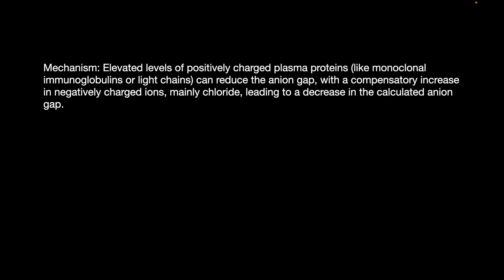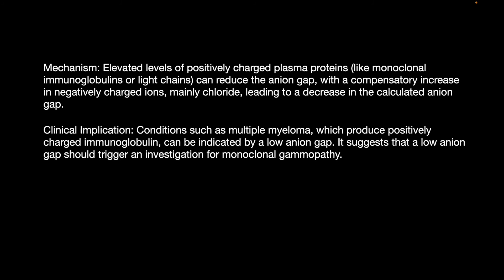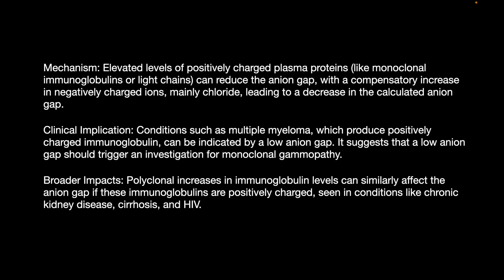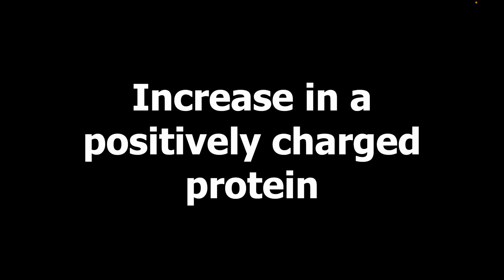Next case: a 70-year-old patient with fatigue while riding a bicycle. Serial lab testing shows anemia, renal insufficiency, and an anion gap of 2. An elevated level of positively charged proteins — such as monoclonal immunoglobulins — can reduce the anion gap, with a compensatory increase in negatively charged chloride. Conditions such as multiple myeloma, which produce positively charged immunoglobulins, can present with a low anion gap.